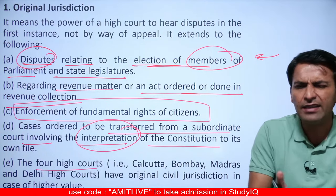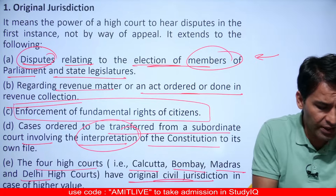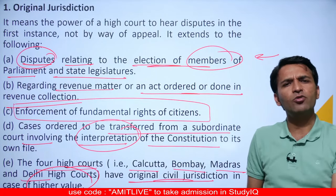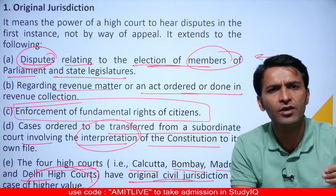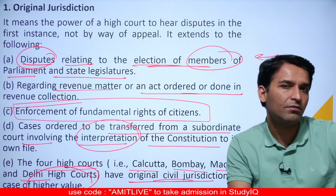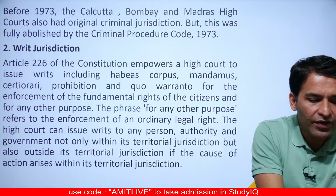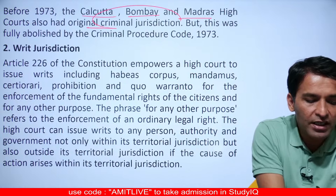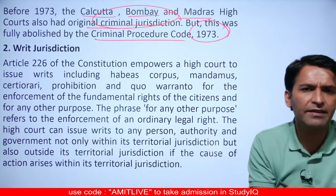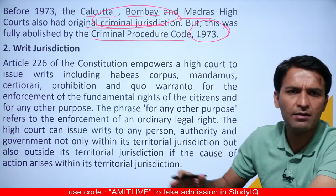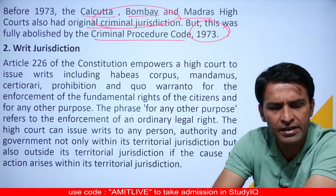Four High Courts — Calcutta, Madras, Bombay, and Delhi — also have original civil jurisdiction, which was historically given under older laws. Before 1973, Calcutta, Bombay, and Madras also had original criminal jurisdiction, meaning criminal cases could be filed directly in those High Courts, but that was removed in 1973. Now, all criminal cases start at subordinate or district/sessions courts and can only be appealed to the High Court.